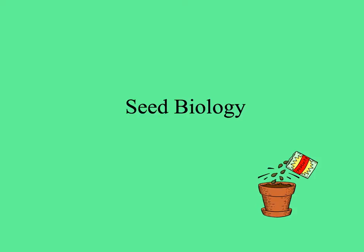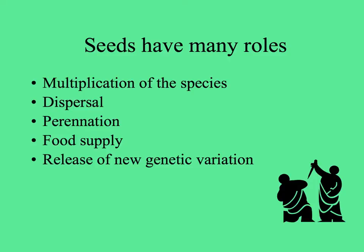The product of sexual reproduction in flowering plants and gymnosperms is the seed. Seeds have many roles in the life of plants. They're important for making more plants and for dispersing new individuals to places distant from the parent. They perinate the species in a given place and sometimes, if they're genetically identical to the parent, they can perinate the genotype as well.